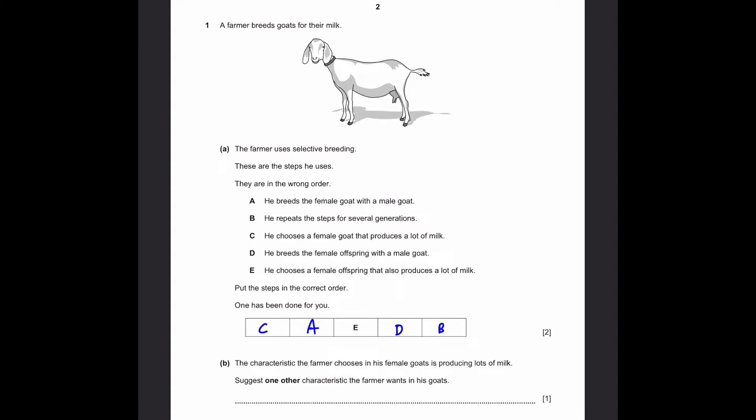Part B. The characteristic the farmer chooses in his female goats is producing lots of milk. Suggest one other characteristic the farmer wants in his goats. One thing is quite obvious - even if you get a lot of milk, if it's not proper milk or it's not healthy, that means it won't be of any use, so he needs healthy milk.